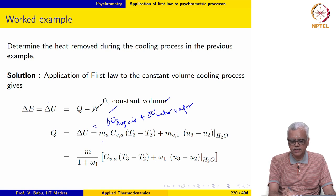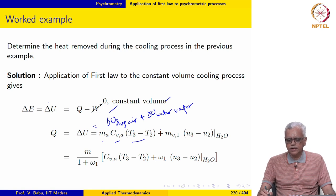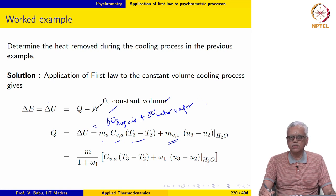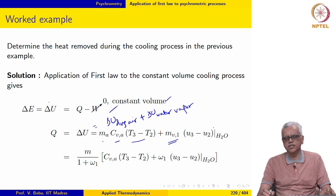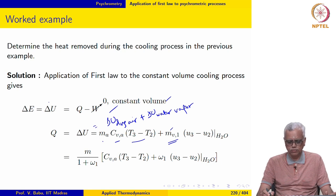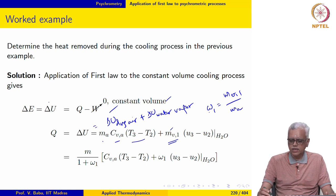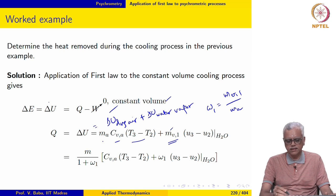Delta U of water vapour is mass of water vapour times (U3 minus U2). The mass of water remains the same and equals MV1. Using the definition of the humidity ratio, omega1 equals MV1 divided by MA, we can write the expression in terms of MA times omega1, and MA itself is written as M over (1 + omega1).